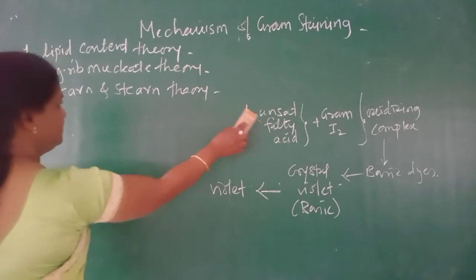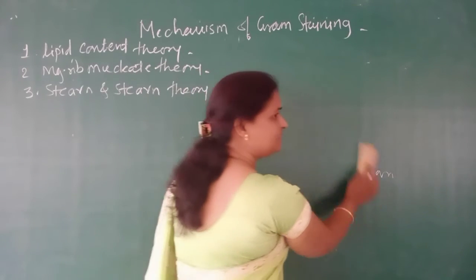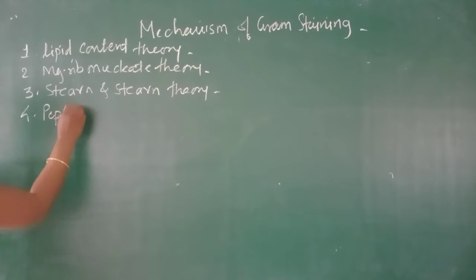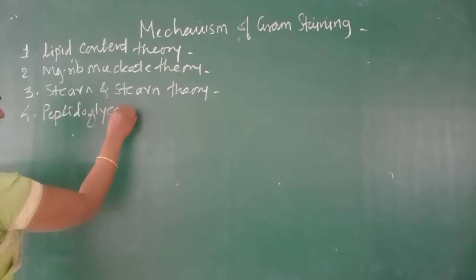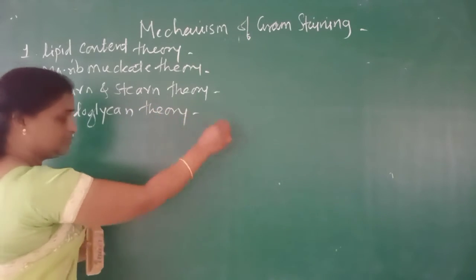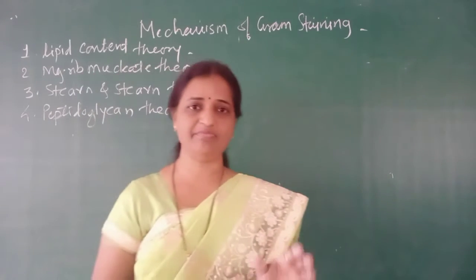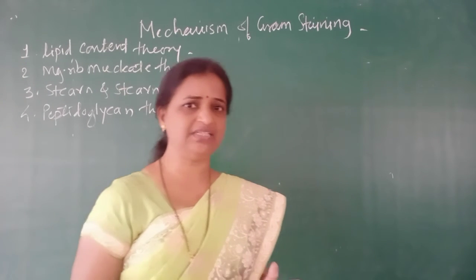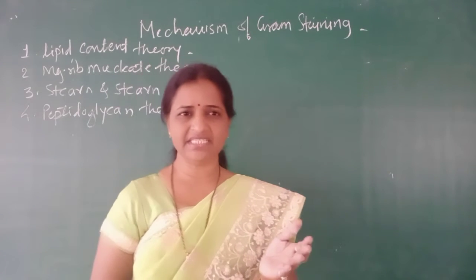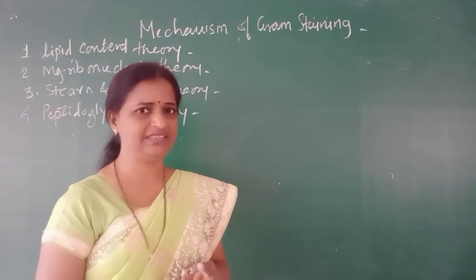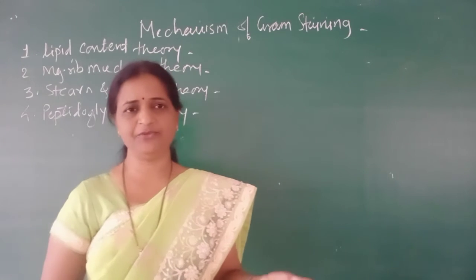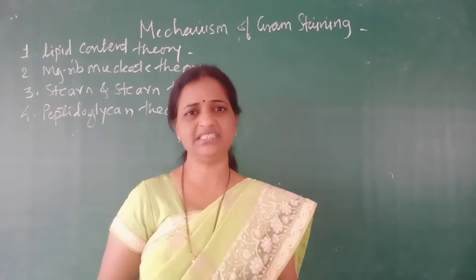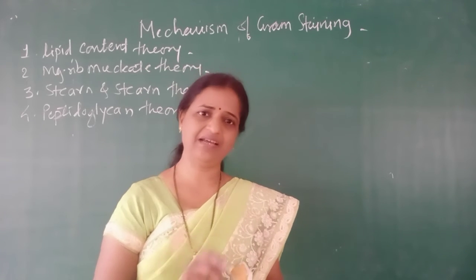So that is the third theory explaining Gram staining — the Stern and Stern theory. The third and last theory is the peptidoglycan theory. As you know, peptidoglycan is present in the cell wall of bacteria — both Gram positive and Gram negative. In Gram positive cell walls, more peptidoglycan is present, which is extensively cross-linked. In Gram negative cells, there is less peptidoglycan and less extensive cross-linking.